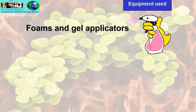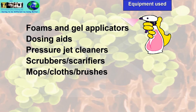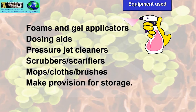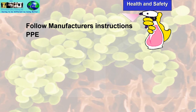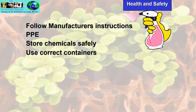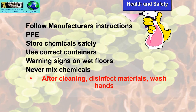Equipment used can include foam and gel applicators, dosing aids, pressure jet cleaners, scrubbers and scarifiers, mops, cloths, and brushes. You must make provision for storage. From a health and safety point of view: always follow manufacturer's instructions, wear appropriate personal protective equipment, store chemicals safely away from food in lockable cupboards, use correct containers, put warning signs on wet floors, never mix chemicals, and after cleaning, disinfect materials and wash hands.